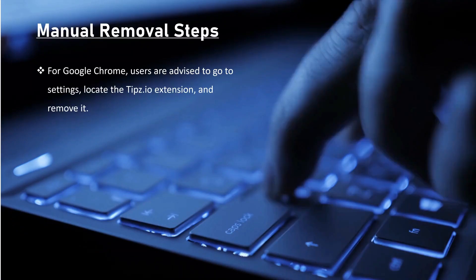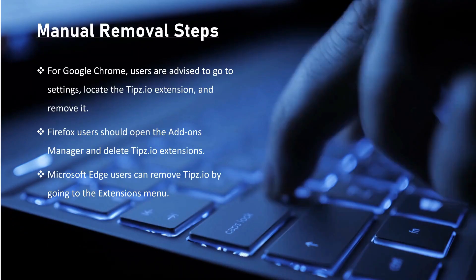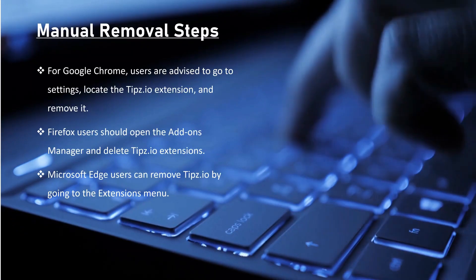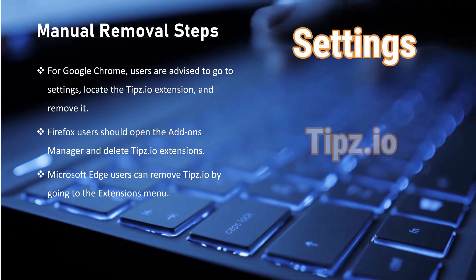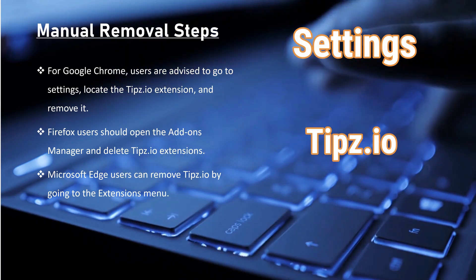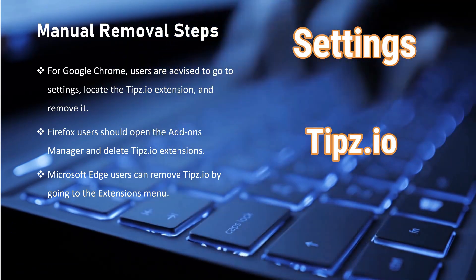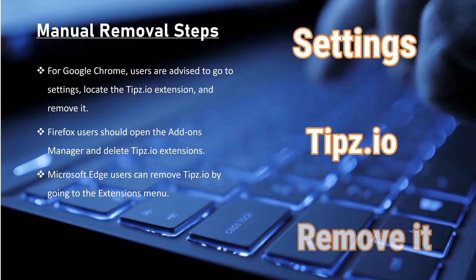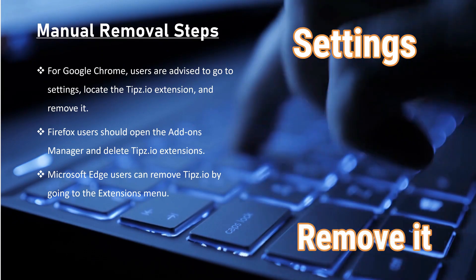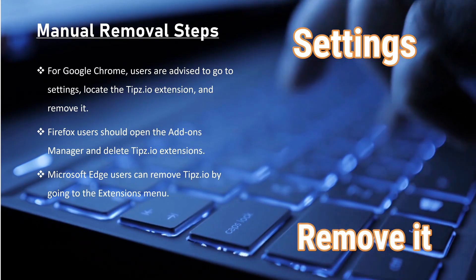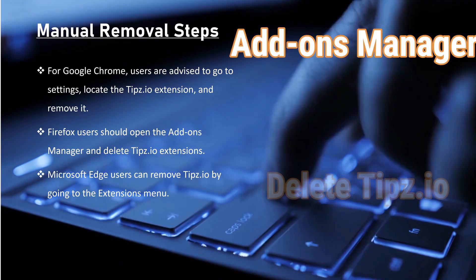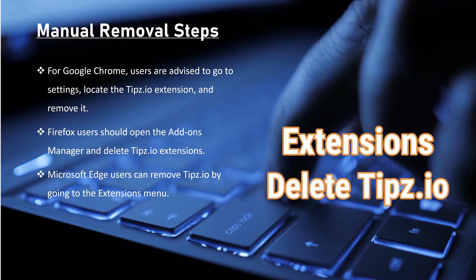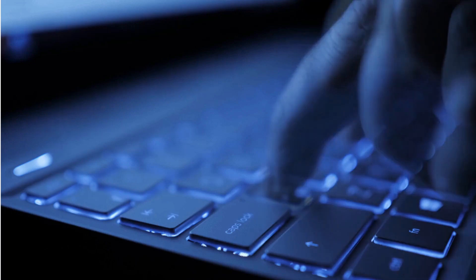For manual removal steps in Google Chrome, users are advised to go to Settings, locate the tips.io extension, and remove it. Firefox users should open the Add-ons Manager and delete tips.io extensions. Microsoft Edge users can remove tips.io by going to the extensions menu.